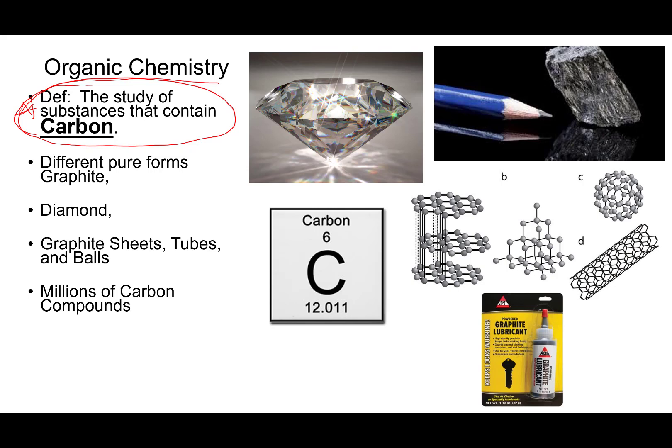Carbon is all around us. It is within you and me and the food that we eat. But it is an amazing molecule because it can bond in lots of different ways. To illustrate that, carbon comes in many pure forms, one of which is the diamond — that is one of the hardest naturally occurring substances, and it can be cut and faceted to look absolutely stunning and gorgeous.